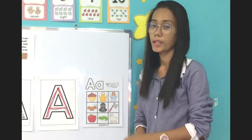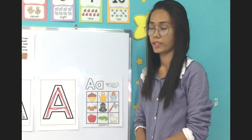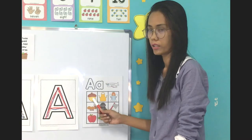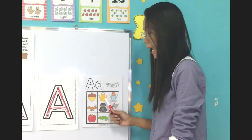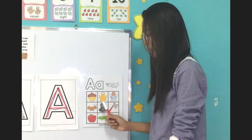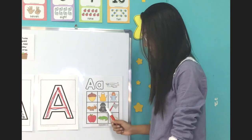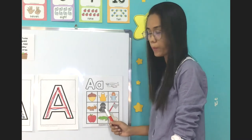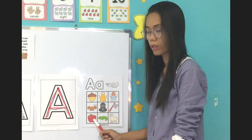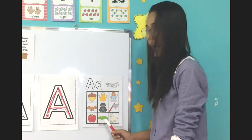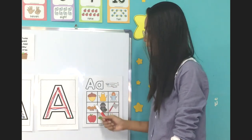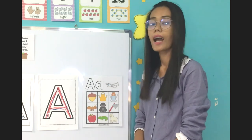What are the things that begin with the letter A? A is for acorn, apron, angel, ant, ape, axe, apple, alligator, alpaca. They all begin with the letter A.